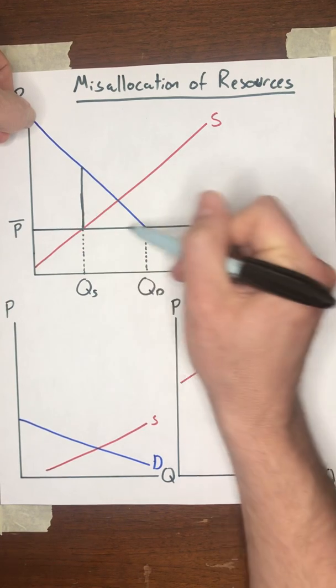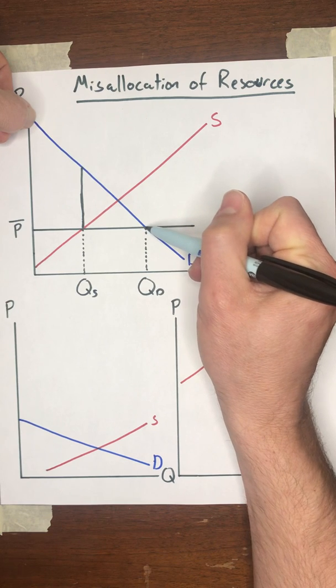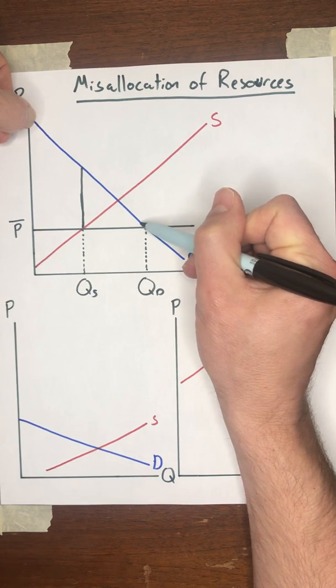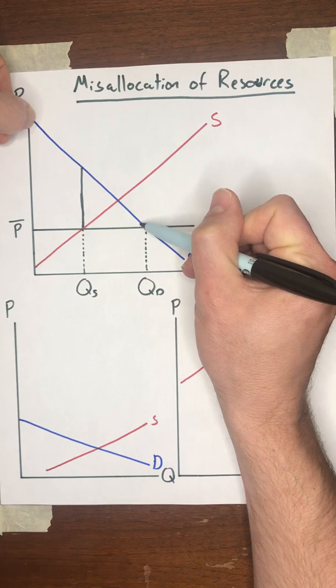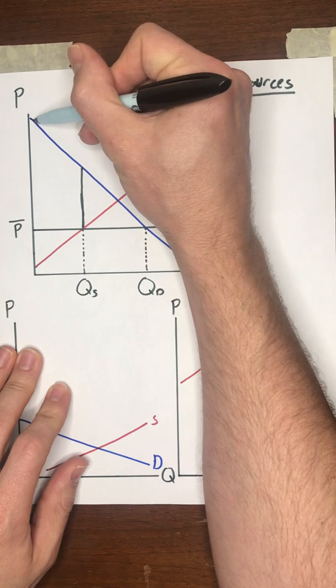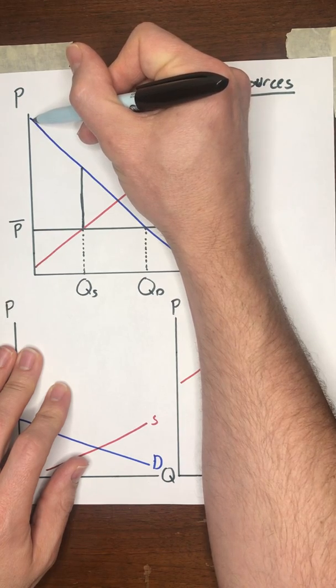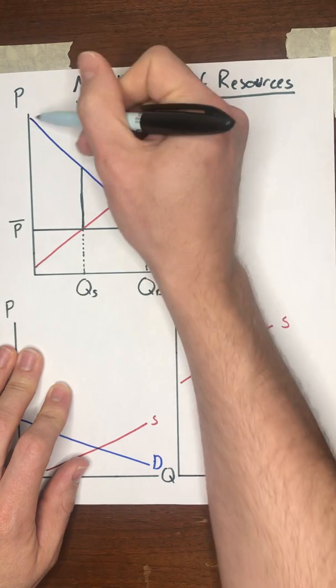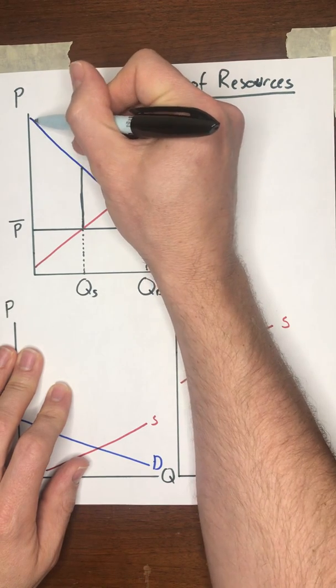And so this buyer manages to purchase the good. He's willing to pay that price, just a little bit more than that price, and he manages to capture it. Whereas maybe this buyer who had a high willingness to pay, he shows up late to the party. By the time he gets to the store, there's no goods available, and so society loses that value.